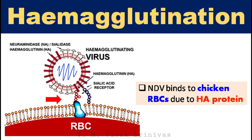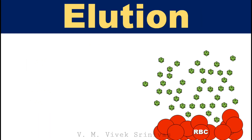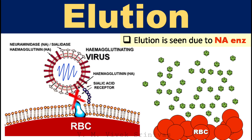This virus possesses hemagglutinin glycoprotein spikes which attach to specific RBCs, that is chicken RBCs. A network of bridges is formed between the RBCs and the viruses — this is called hemagglutination. Following agglutination with RBCs, the virus later detaches from the RBCs due to neuraminidase enzymes present in the same viruses, by breaking the bridges formed between the cells and the viruses. This is called elution.